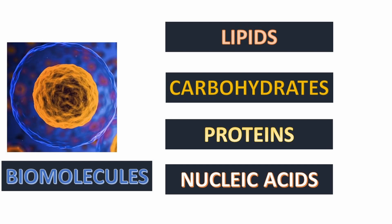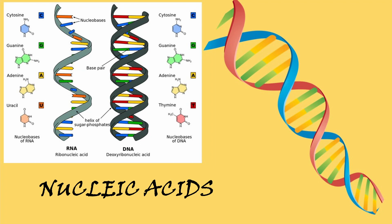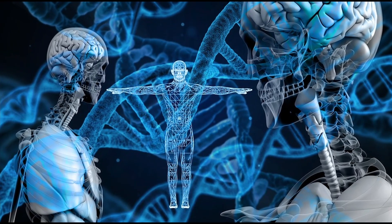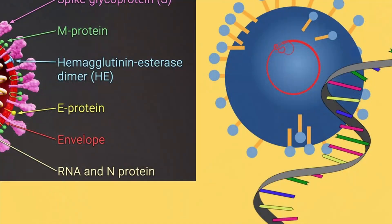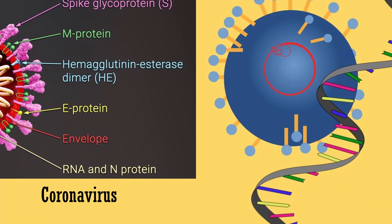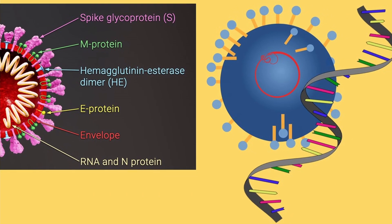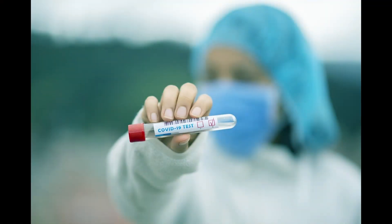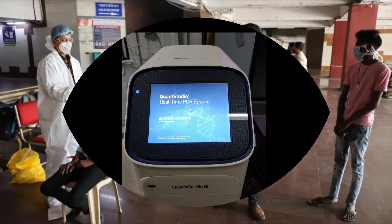I have talked about biomolecules in my first video, and nucleic acids are one of the biomolecules. DNA is the molecule that stores or encodes all the genetic information and determines who we are. But there are some viruses such as coronavirus and HIV which use RNA for genetic storage and encoding. So if we have to know whether any individual has COVID or not, we detect the RNA in that individual's sample.